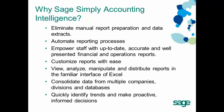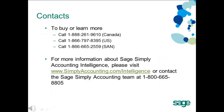That allows you to quickly identify trends and make proactive, informed decisions, rather than working with data that may be old or inaccurate. Thanks for taking the time to find out more about Sage Simply Accounting Intelligence. To buy or learn more, please call the relevant number on your screen, visit www.simplyaccounting.com/intelligence, or contact the Sage Simply Accounting team at 1-800-665-8805. We trust that this product will save you time and money and prove very useful in providing meaningful, timely information to improve your decision-making.